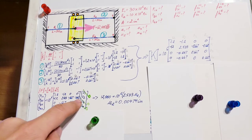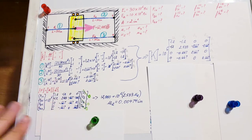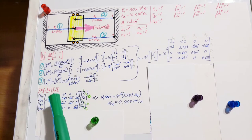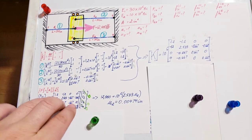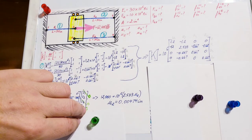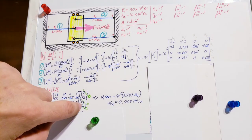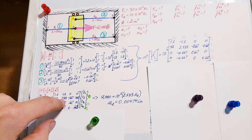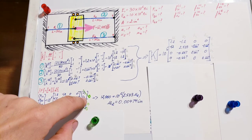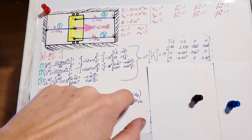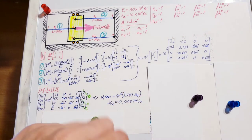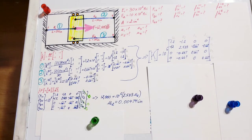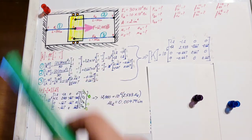u2 and this line with f2x—the only unknown is u2, we can simply find it. This line is the only equation we're working with from this whole matrix setup. Write it up: 12,000 equals 10^6 times this matrix multiplied with these. Since these are zero, everything falls out except 2.533 times u2. Therefore, u2 equals 0.00474 inches.